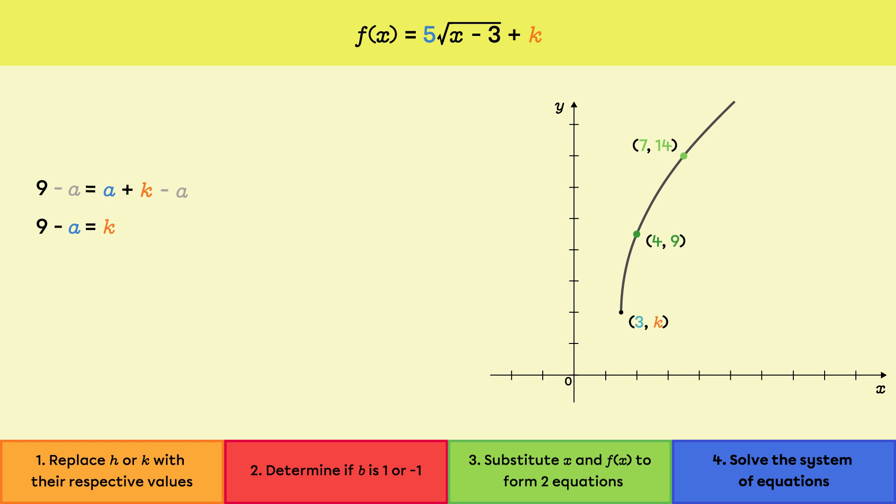The only thing left to do is to find the value of k. To do this, we must go back to the equation 9 minus a equals k and replace a with 5. This gives 4 equals k.